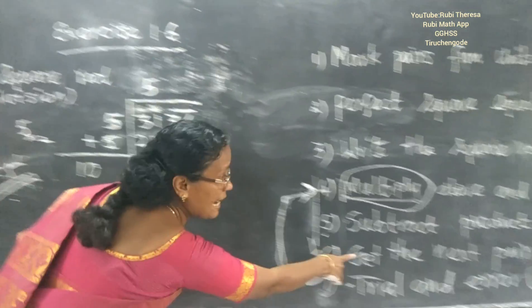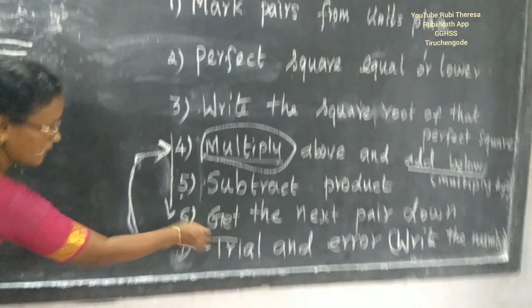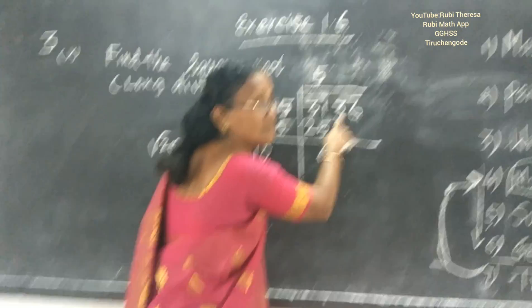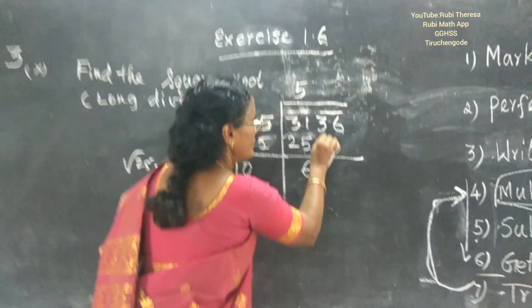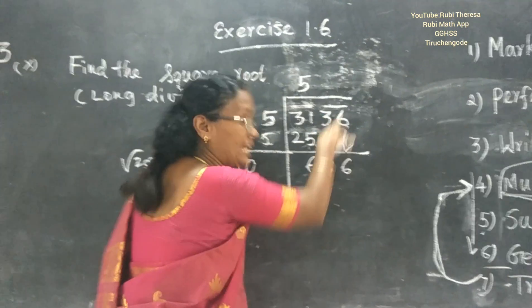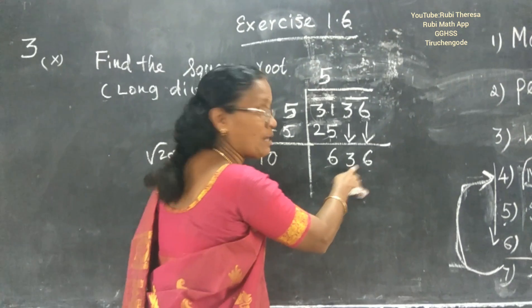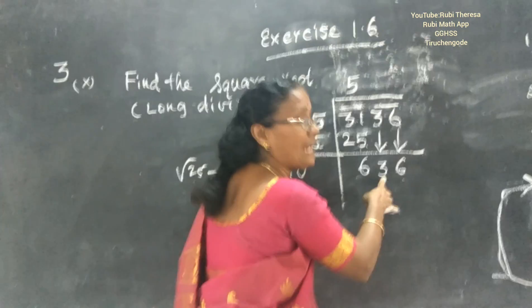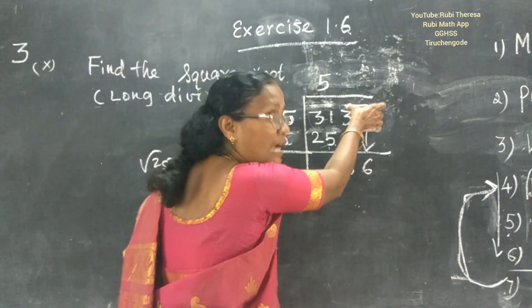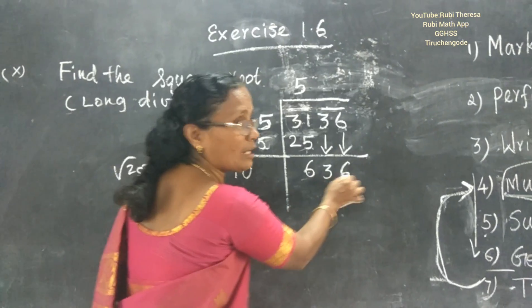Next, bring down the next pair. The next pair is 36, so you bring it down together with the remainder to get 636. This is a speciality of the square root long division — you bring down two digits at a time. Now you have the number 636.